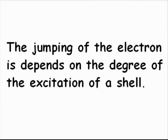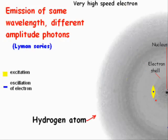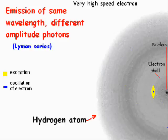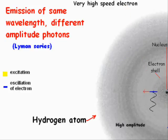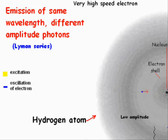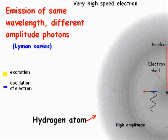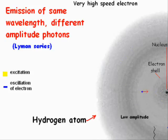The degree of jumping depends on the degree of excitation of the shell. If the electron shell is extremely excited — for example, by a high-energy electron — the shell oscillates at its natural frequency but with a higher amplitude. The electron then emits a high-amplitude photon at the natural frequency of the shell and jumps to a more outer transubrations shell. In the absence of further excitation, the electron instantaneously falls back to the electron shell.